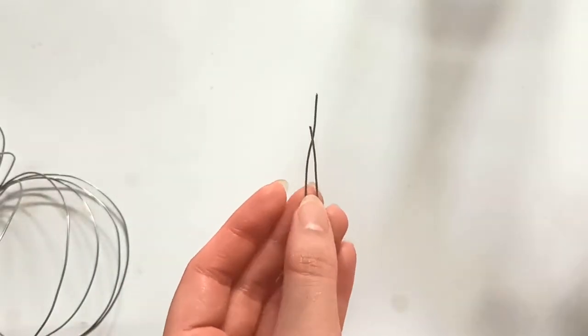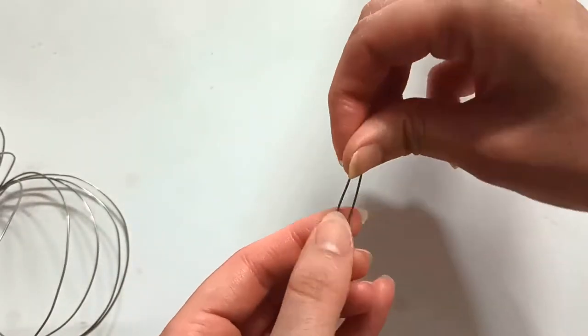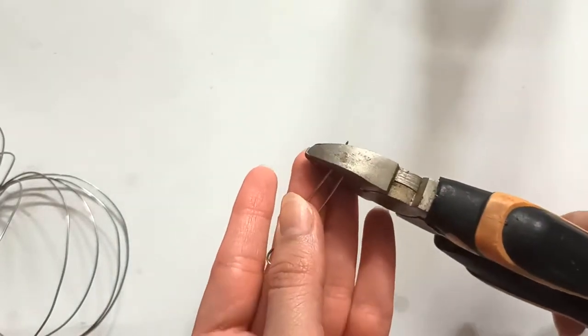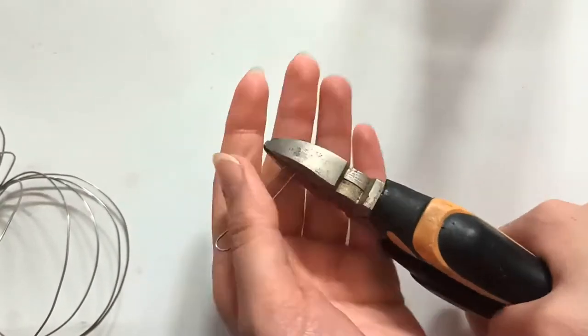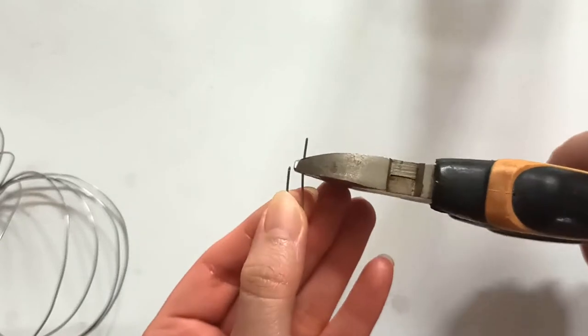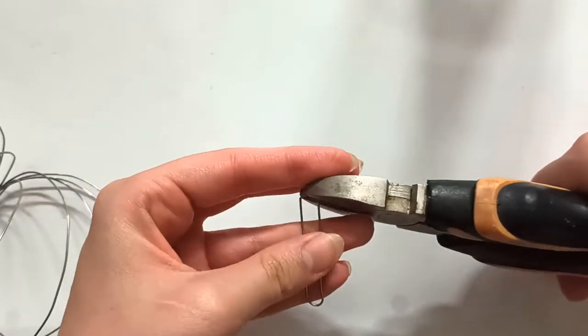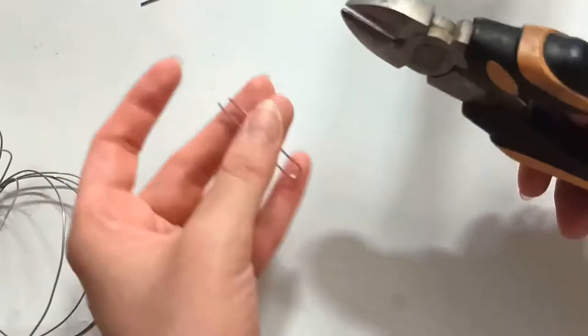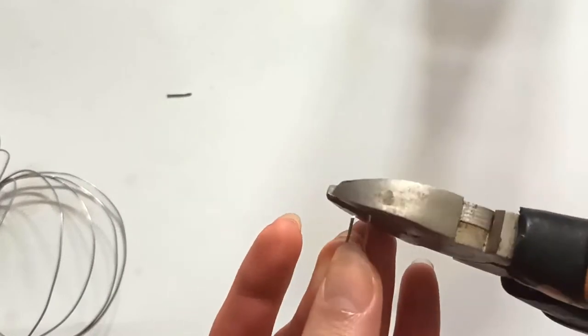To start, choose a straight wire piece of about 8 centimeters and make a U-turn in the center by using a round nose pliers. Keep the middle and bend it over. Make sure both ends are just even.